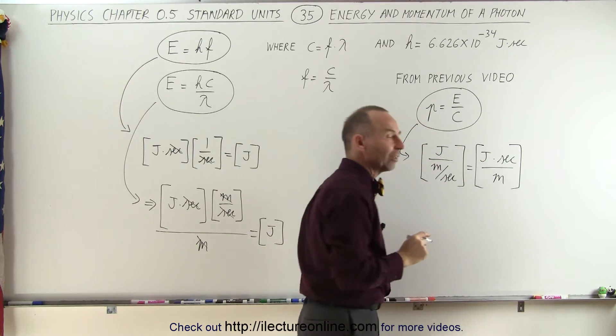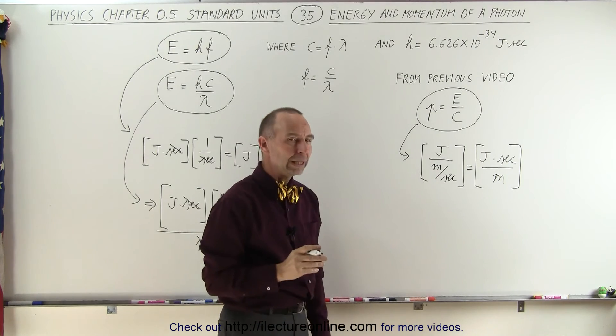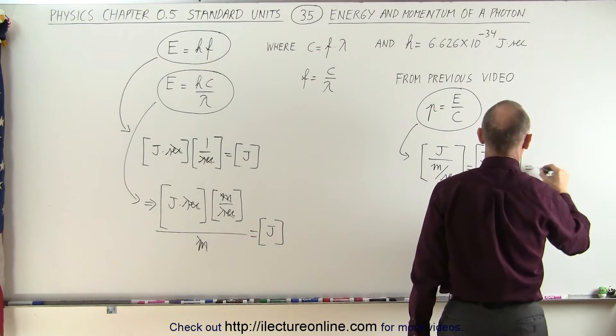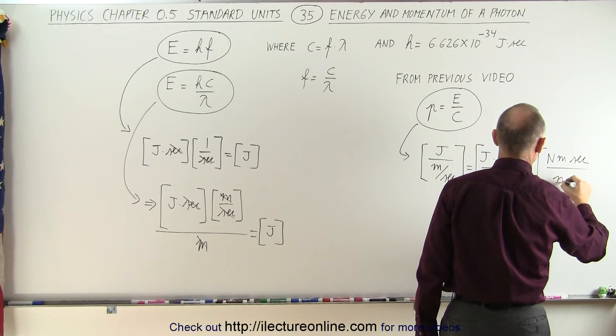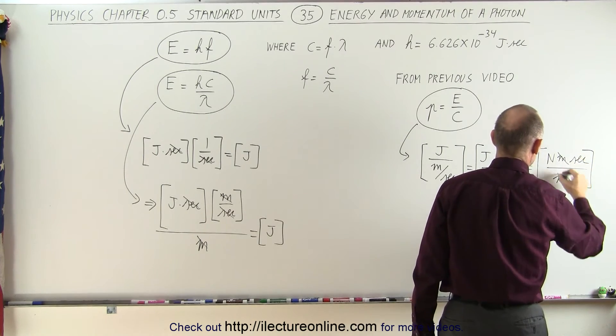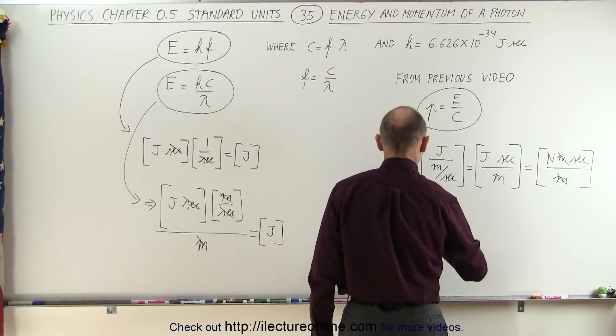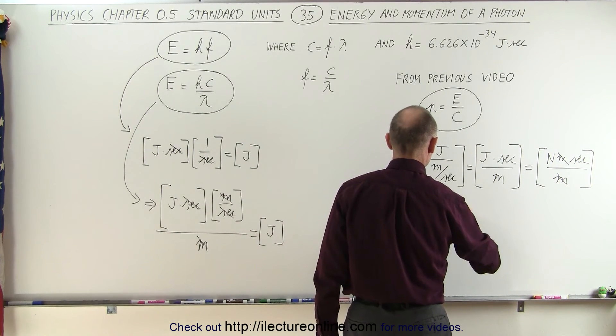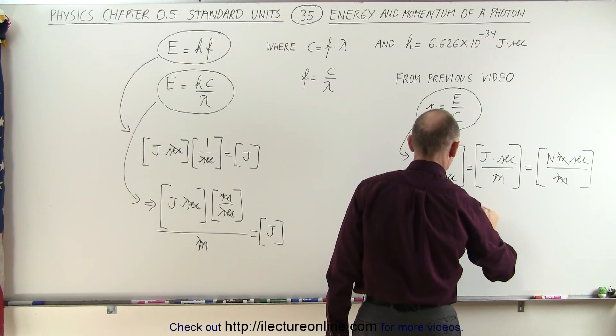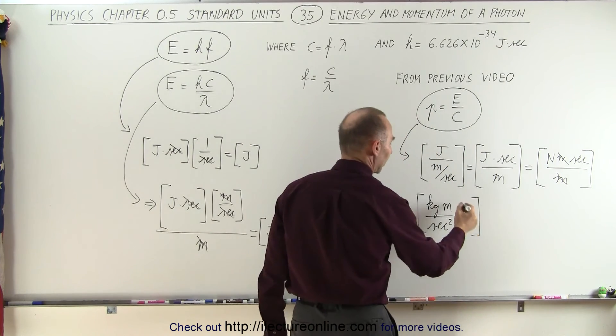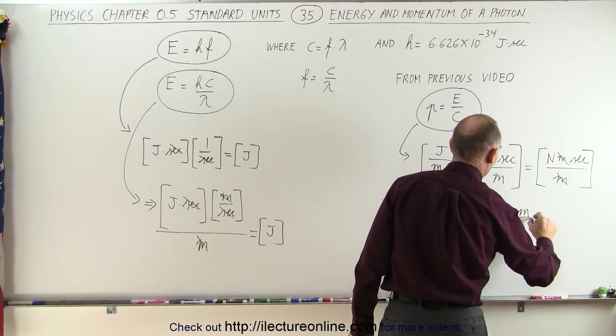Now the question is, does that give us the units of momentum? Well, let's find out. Joule is a Newton meter. So this can be written as Newton meter times seconds divided by meters. Right away, the units of meters cancel out. And now we can convert the units of Newton to what Newton is equal to, which is a kilogram meter per second squared. That's for Newton. And we have seconds in the numerator, so times seconds. And so this second cancels out this second. And now we end up with the units of kilograms times meter per second.